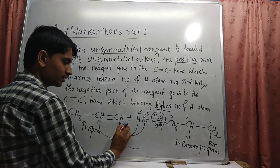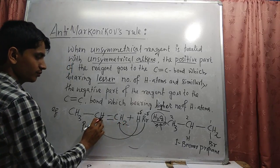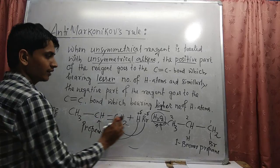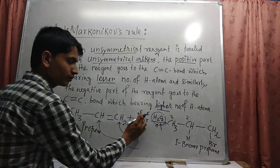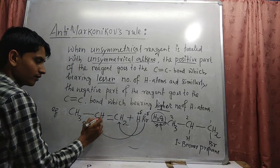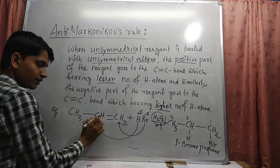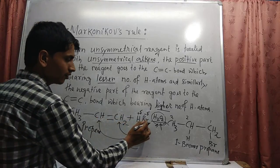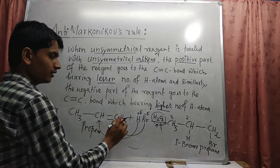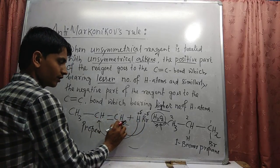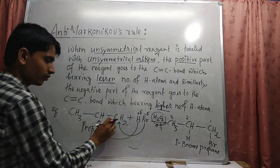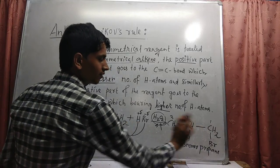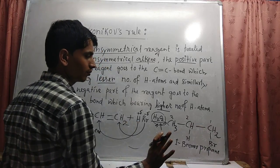In this position, two hydrogen atoms are attached. In this other position, one hydrogen atom is attached. That is why the positive part of the reagent goes to the carbon atom with one hydrogen, and the negative part of the reagent goes to the carbon atom with two hydrogens. Due to the heating process, this bond will break and form a single bond, yielding this type of compound.